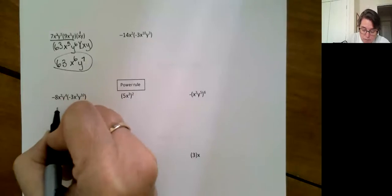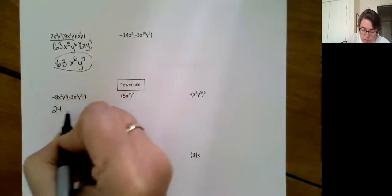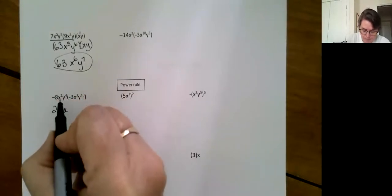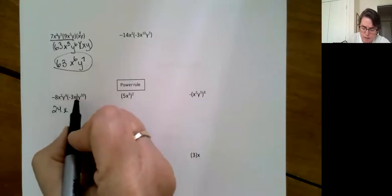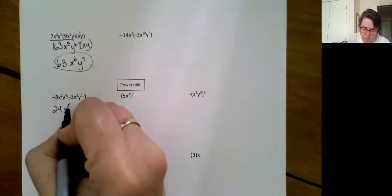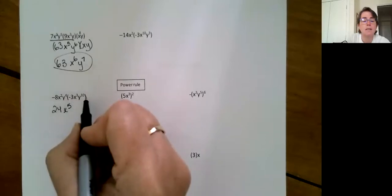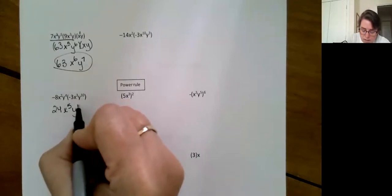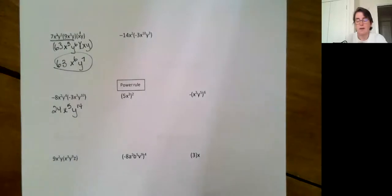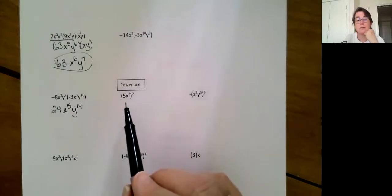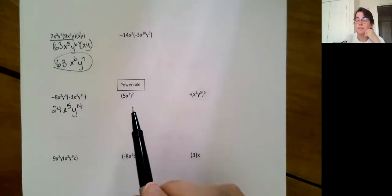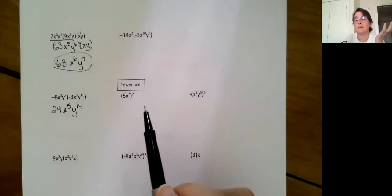Negative eight times negative three is 24 x to the squared and cubed, so that's x to the fifth. Y to the fourth and y to the tenth, that's y to the fourteenth. If you haven't turned off the video by now, you should have. You should be able to do the rest of these questions. The power rule, maybe you've not seen before, but see if you can do it anyway.